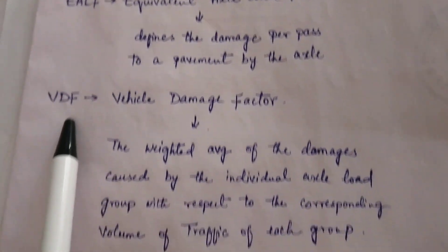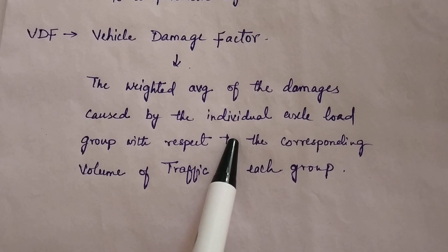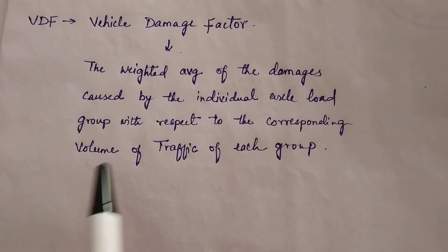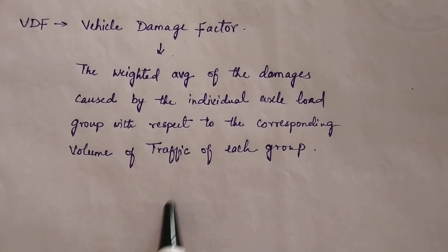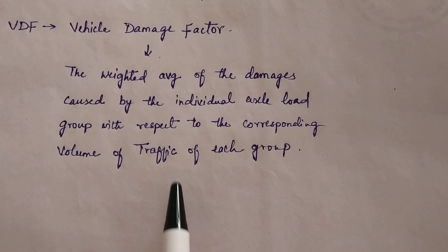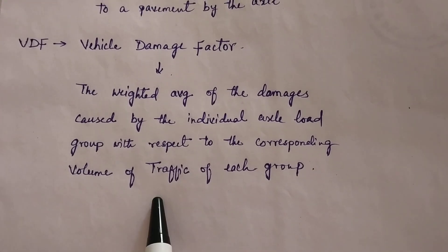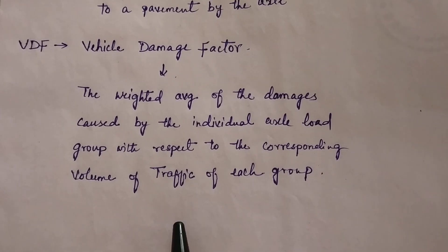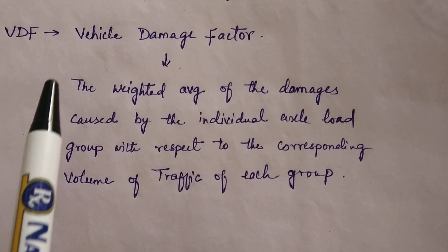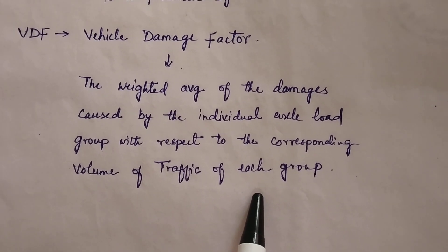VDF is defined as the weighted average of the damages caused by the individual axle load group with respect to the corresponding volume of traffic of each group. First we make a group of single axle load and tandem axle load, then take the volume of traffic in each group, then take the weighted average for single axle and tandem axle, and finally take the total volume of traffic. The full form of VDF is Vehicle Damage Factor — it has no units.